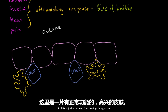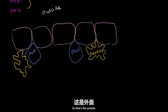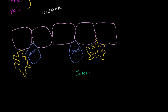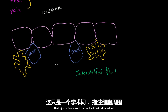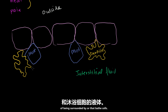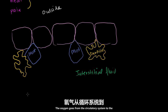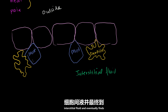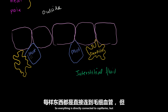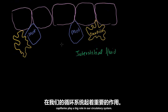So this is just a normal, functioning, happy skin. Over here, this is the interstitial fluid — just a fancy word for the fluid that bathes cells. The cells aren't all directly connected to the circulatory system. Oxygen goes from the circulatory system to the interstitial fluid and eventually finds its way into cells. Capillaries play a big role in our circulatory system.